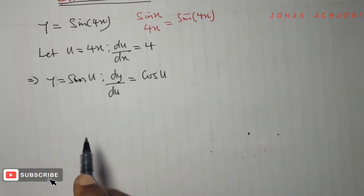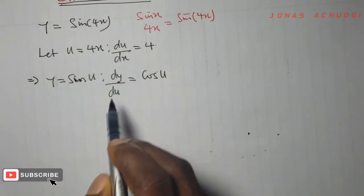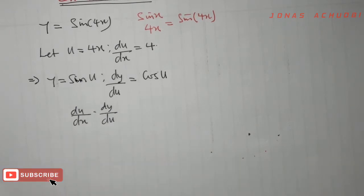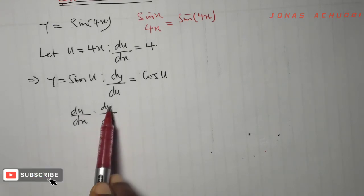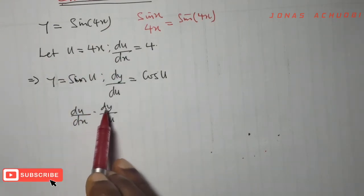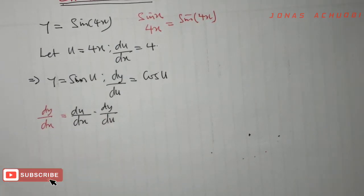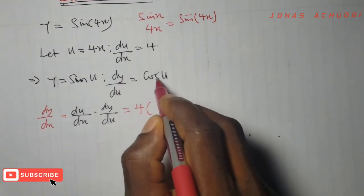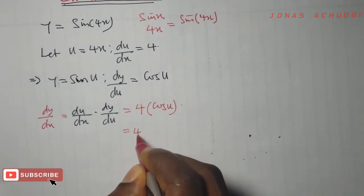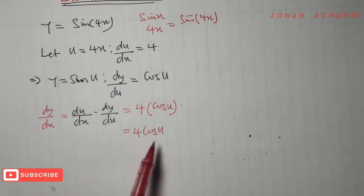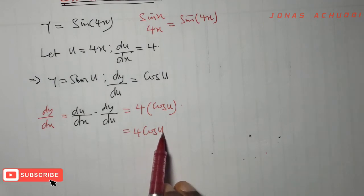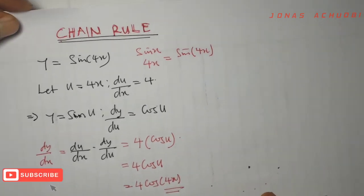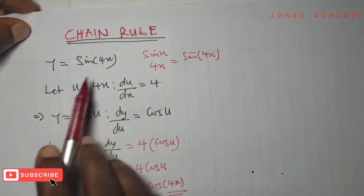Having done this, we want to find dy/dx. What we have is du/dx and dy/du. If I write du/dx multiplied by dy/du, we see that du will cancel du and what is left is dy/dx, which is what we're looking for. So du/dx times dy/du equals dy/dx. du/dx is 4, and dy/du is cos u. So that gives us 4 cos u. But in the original problem there was no u — we said let u be 4x — so we replace u with 4x, giving us 4 cos(4x).